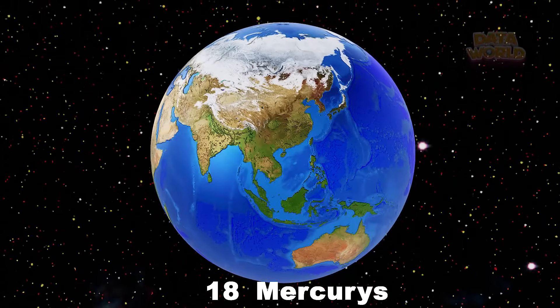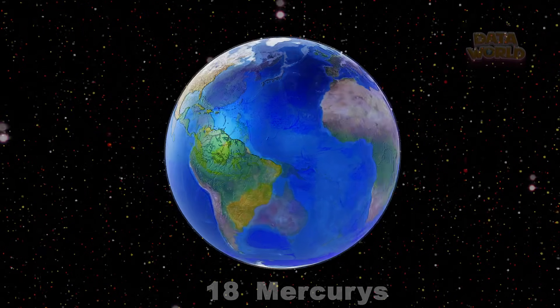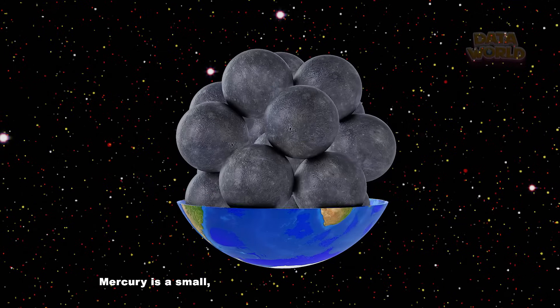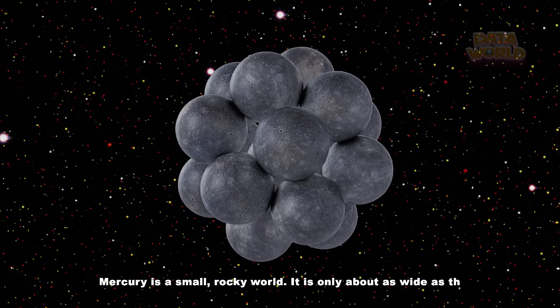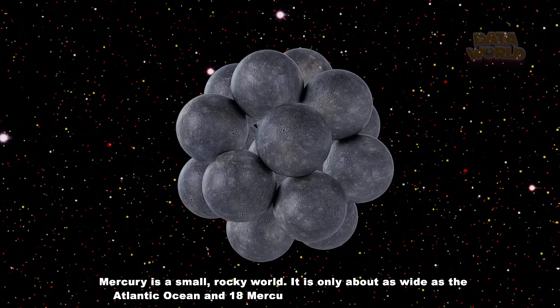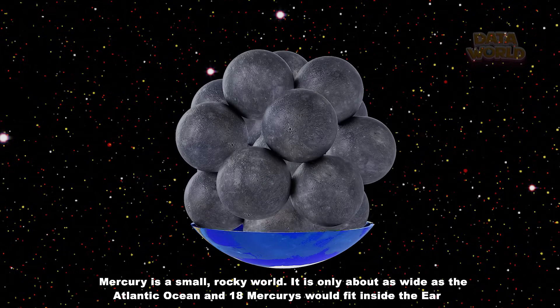18 Mercurys. Mercury is a small, rocky world. It is only about as wide as the Atlantic Ocean and 18 Mercurys would fit inside the Earth.